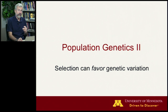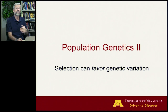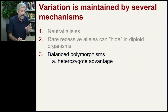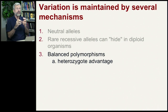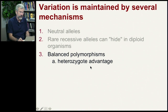Now I want to turn to the possibility that there are many circumstances where selection can actually favor genetic variation. There are real advantages to being different from others or to have a combination of genes. So let's first look at what are called balanced polymorphisms — a polymorphism means alternative forms, and here it refers to these alternative alleles. We have a balanced polymorphism through what's known as heterozygote advantage.